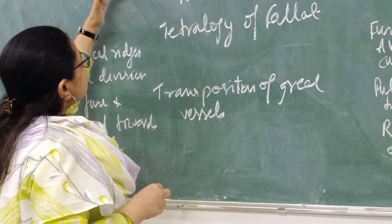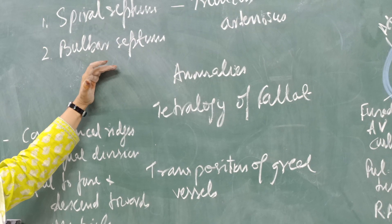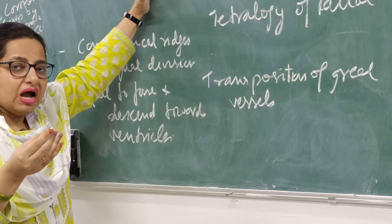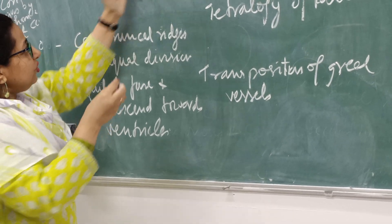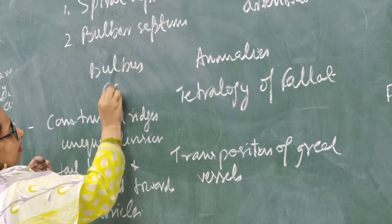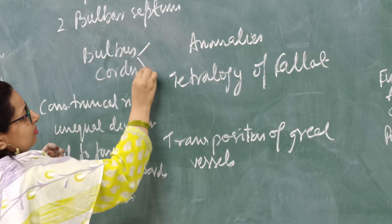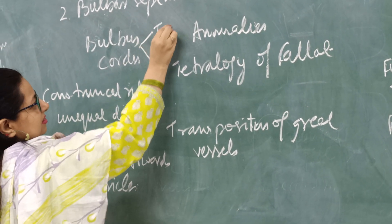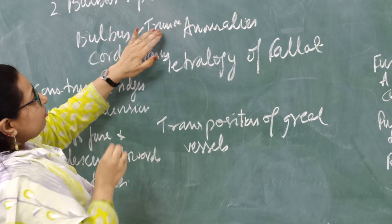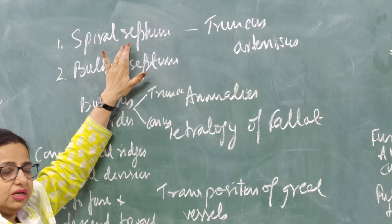Another septum appears in the conus of the bulbus cordis. If you recall, the two heart tubes after they fused there is formation of the bulbus cordis, which divides into the truncus and conus. In the truncus arteriosus there is formation of the spiral septum dividing the pulmonary trunk and aorta.